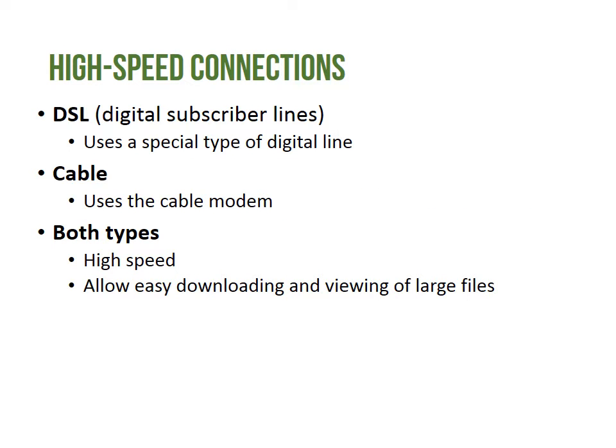High-speed connections allow you to use the internet more effectively. DSL, or digital subscriber lines, use a special type of digital line usually provided by your telephone company. Cable high-speed allows you to use your cable lines with special modems to access the internet. With both types, the connection speed is high, and you can easily download and view large files.